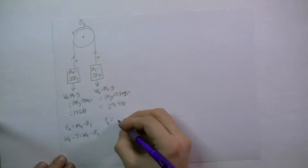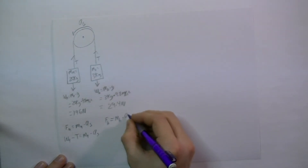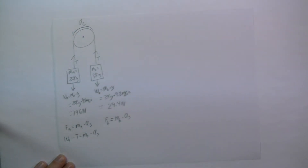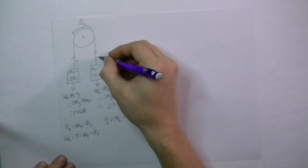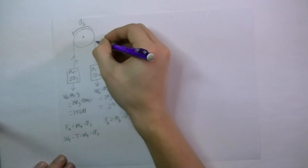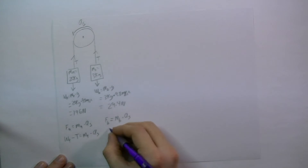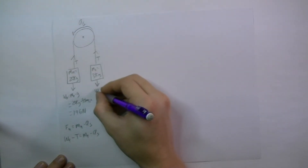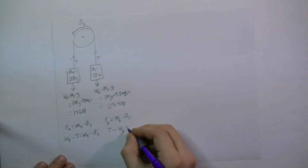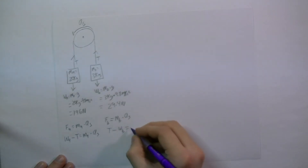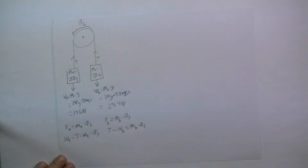Similarly, for block B, the force on block B will equal the mass of the block times the acceleration of the system. For block B, the tension is in the direction of the acceleration of the system. So we will have tension minus the weight of B, because it's in the opposite direction, equal to the mass of B times the acceleration of the system.